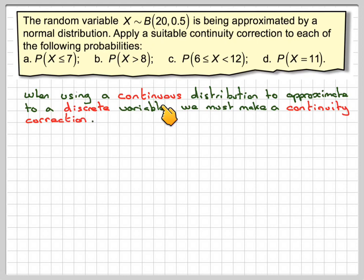One of the reasons for actually doing this approximation is if n is very large, then it's very difficult to calculate these probabilities with a calculator or using the tables, particularly if n was 50 or 100. So we use this idea, we approximate the binomial by a normal distribution.